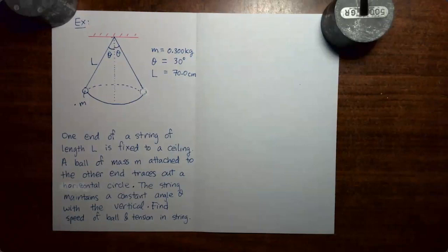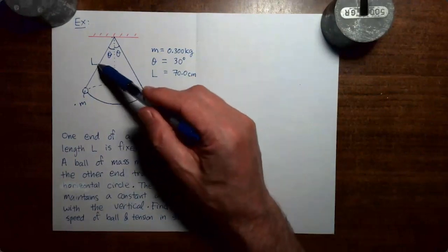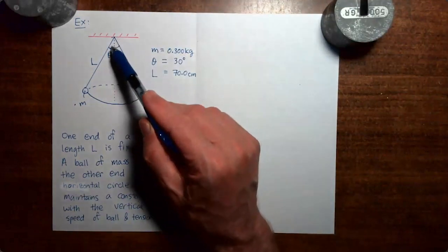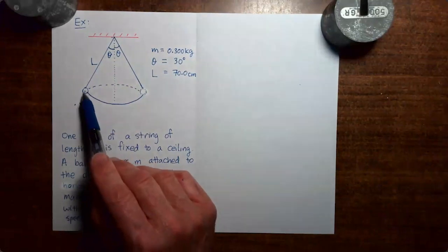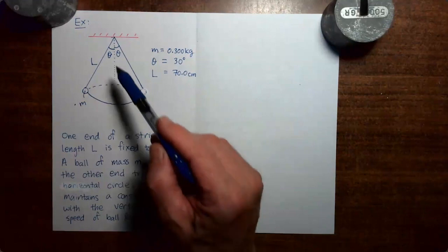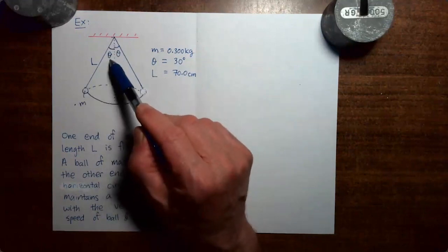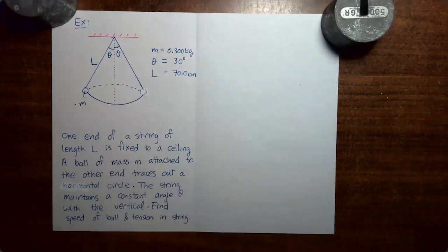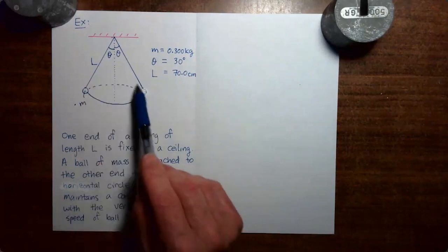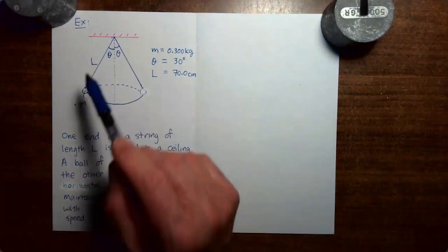In this video, we're going to do a second example where we use Newton's second law of motion to analyze an object which is moving in a circle. What we have here is a string of length L, one end attached to the ceiling and the other end attached to a mass moving round and round in a horizontal circle. The string always maintains the same angle theta with the vertical direction. We want to find the speed of the mass and the tension in the string.